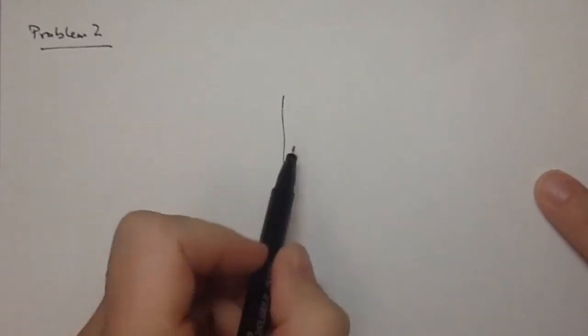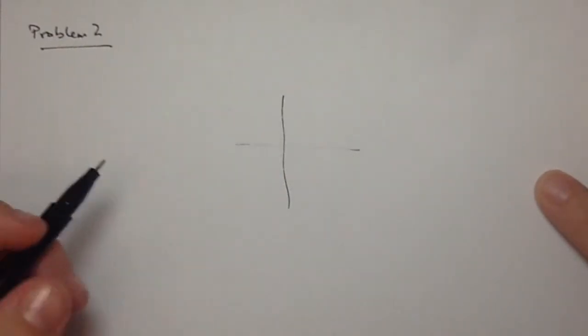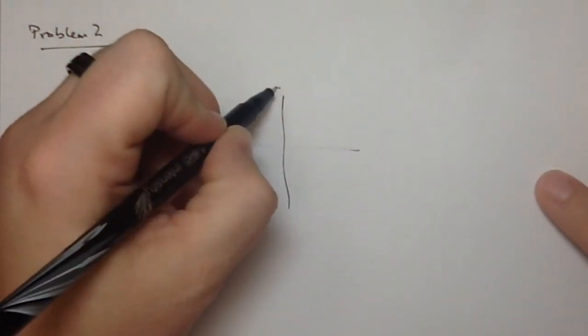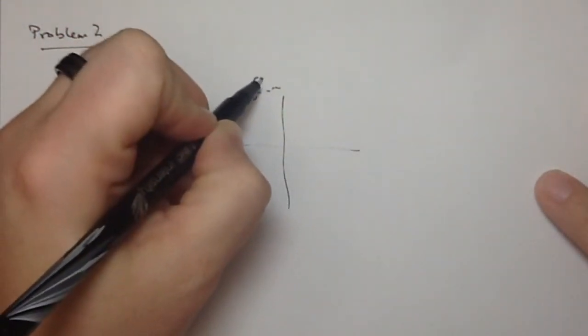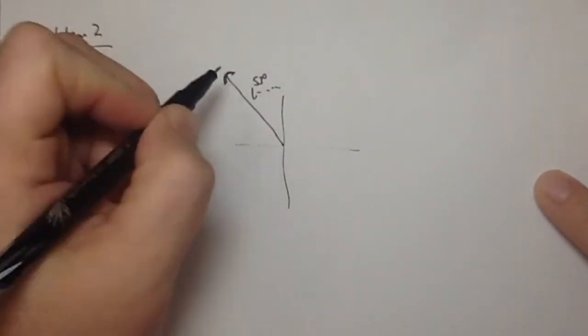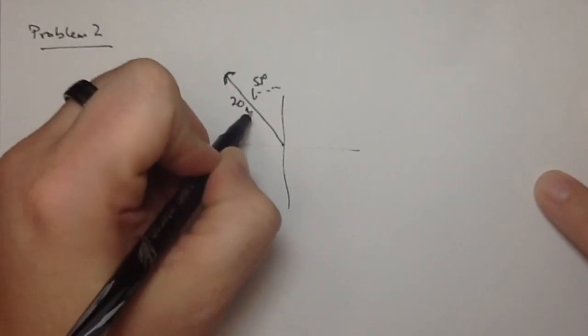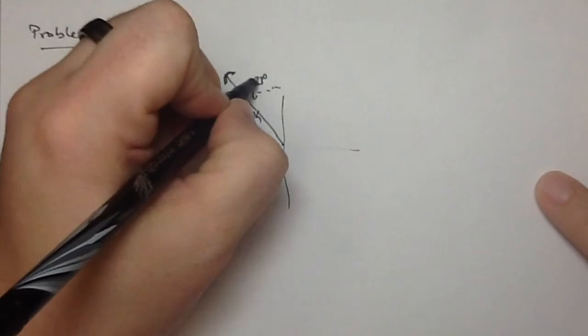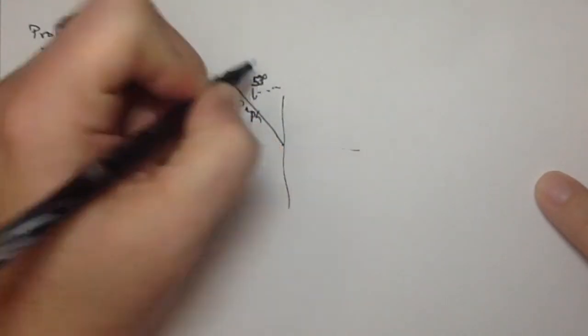So the thing is, there's this ship and it leaves at 8 a.m. at a bearing of north 53 degrees west. So you go north and then you go 53 degrees. So this is our original bearing at 20 miles an hour. And that's 53 degrees.